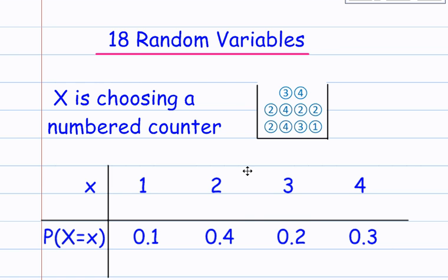There are 2 3's, 2 out of 10, 0.2. And there are 3 4's, so that's 3 out of 10, 0.3. So the probability of choosing a counter X equals one of these values with these probabilities.